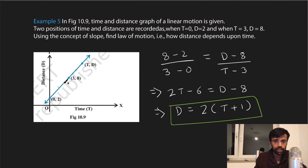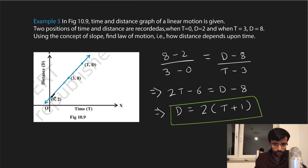We need a general relation between distance and time. Taking a general point (T, D) on the line, we have three collinear points. So: slope = (8 − 2) / (3 − 0) = 6/3 = 2, and this must equal (D − 8) / (T − 3). So 2(T − 3) = D − 8, giving 2T − 6 = D − 8.